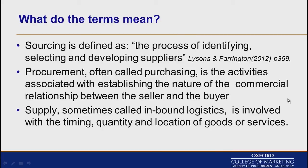What do some of the terms mean that we're using here? Sourcing, defined by License and Farringdon — the core textbook for the module — is the process of identifying, selecting, and developing suppliers. Sometimes called purchasing, it is the activities associated with establishing the nature of the commercial relationship between a seller and a buyer. Supply, sometimes called inbound logistics, is involved with the timing, quantity, and location of goods or services.